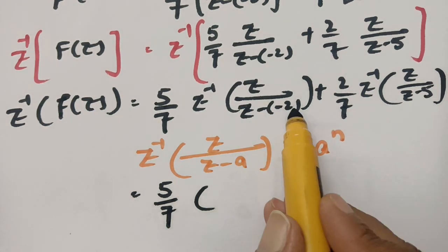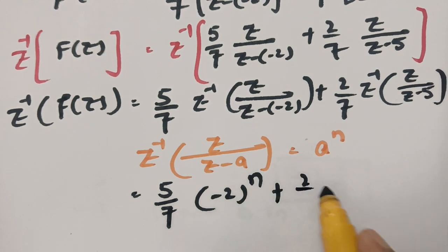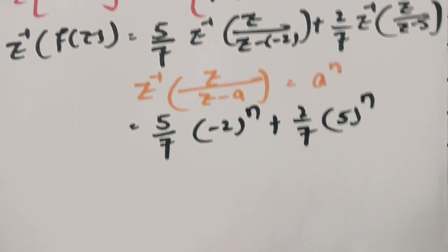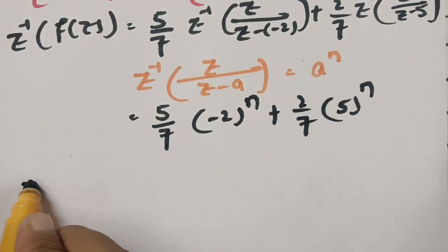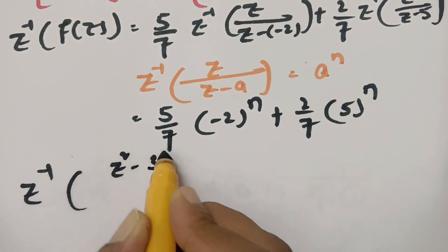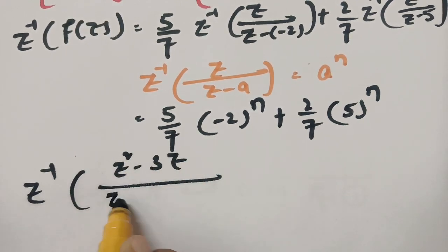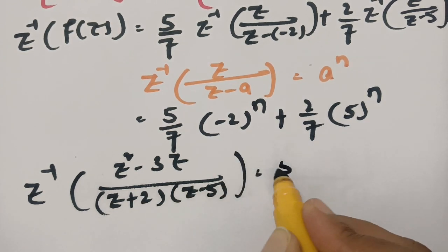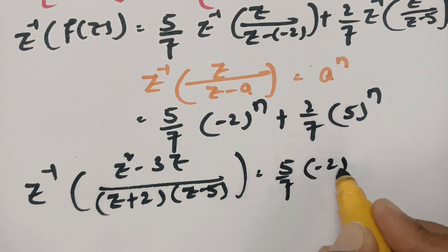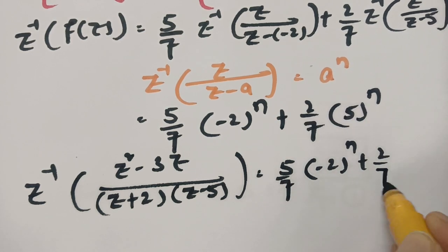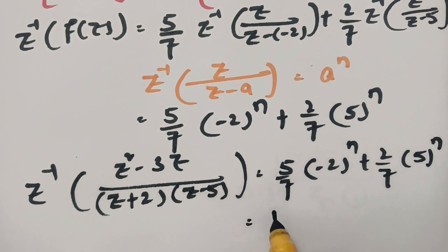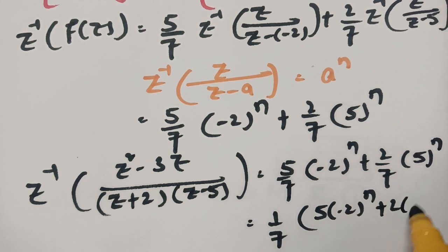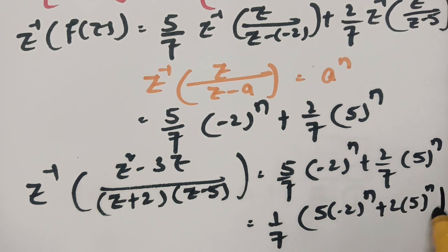Applying the formula — in place of A we have minus 2 for the first term and 5 for the second — this gives the final answer. Z inverse of Z squared minus 3Z by Z plus 2 into Z minus 5 equals 5 by 7 times minus 2 power N plus 2 by 7 times 5 power N, or equivalently 1 by 7 times of 5 into minus 2 power N plus 2 into 5 power N.